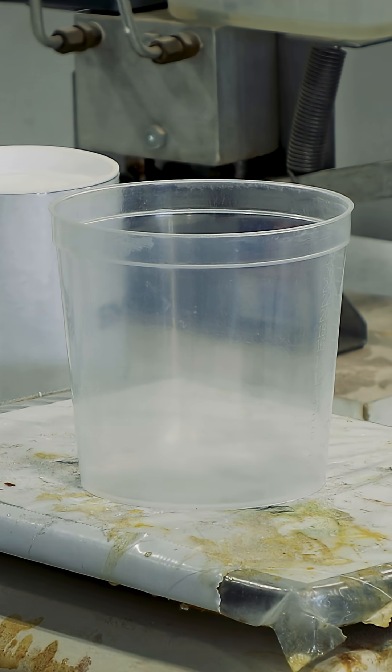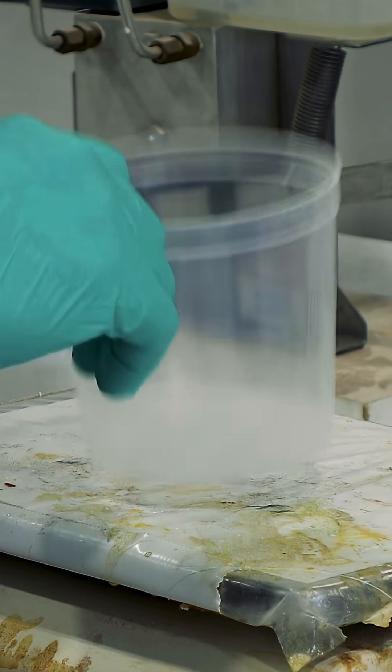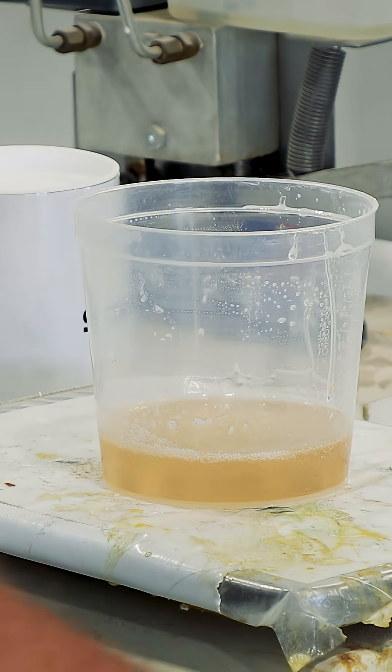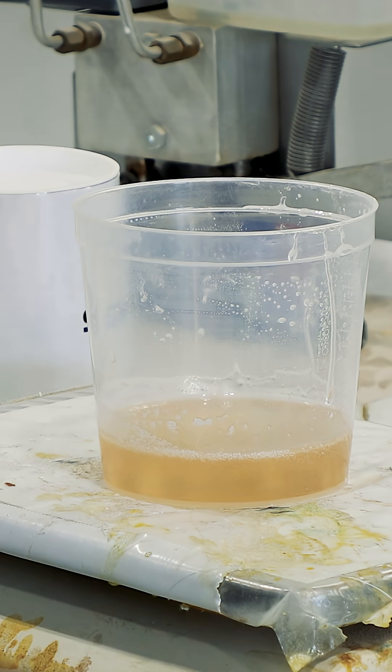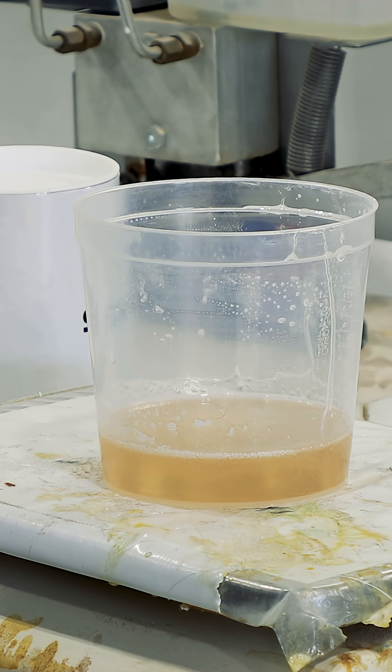So the first thing we'll do is put an empty cup on the scale and zero it out, and then we can weigh our epoxy. In this case we have 142 grams, so we only need about four and a quarter grams of 404 and 406.